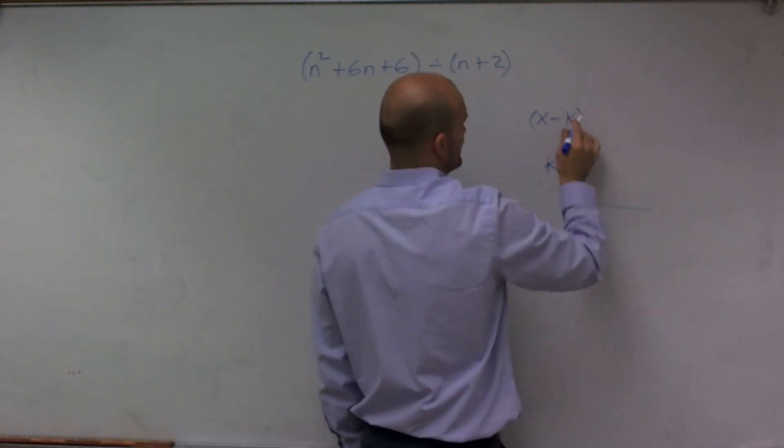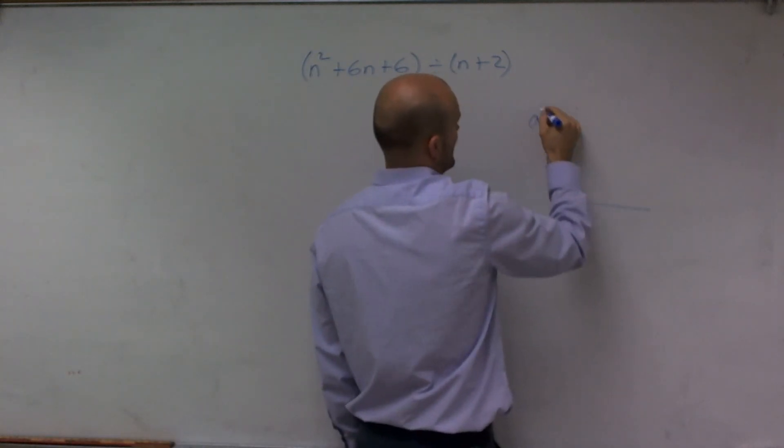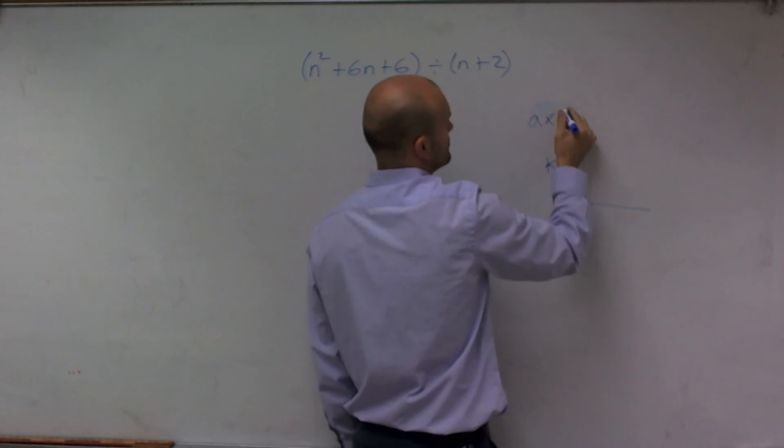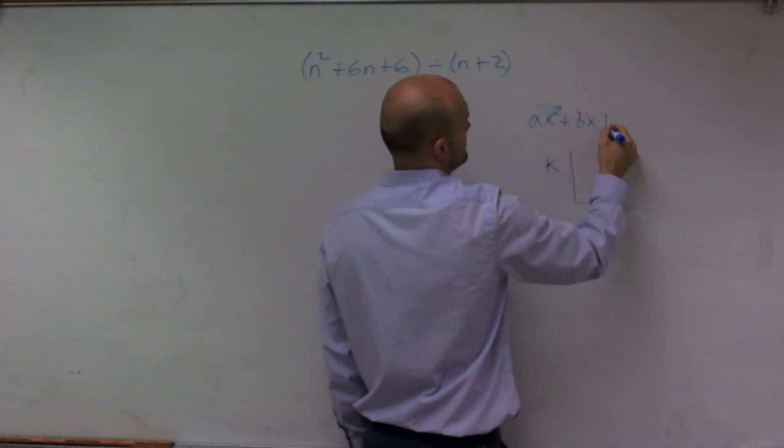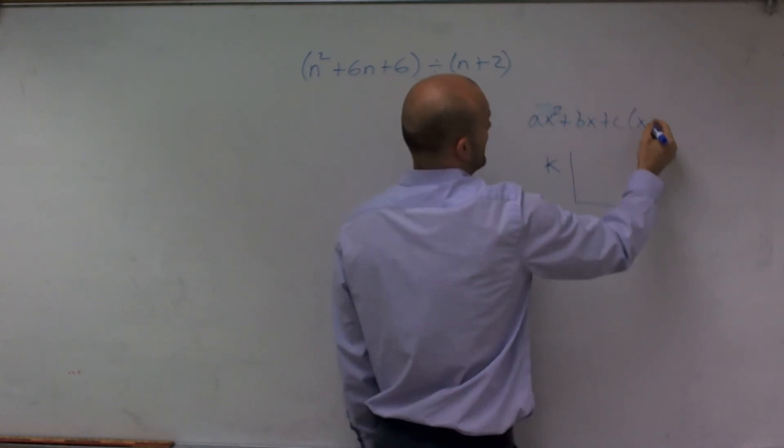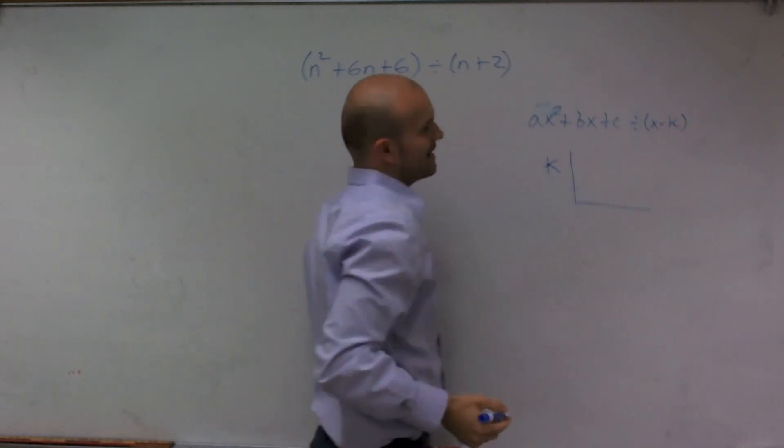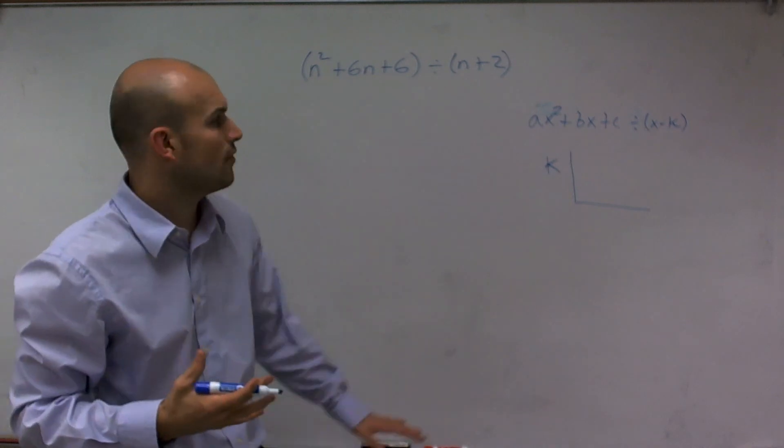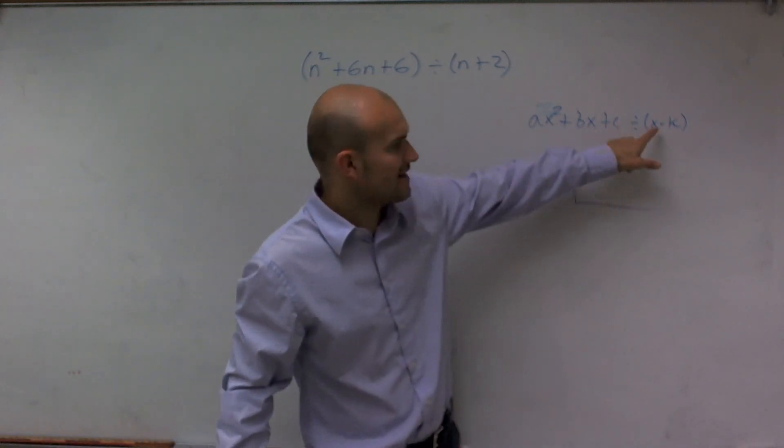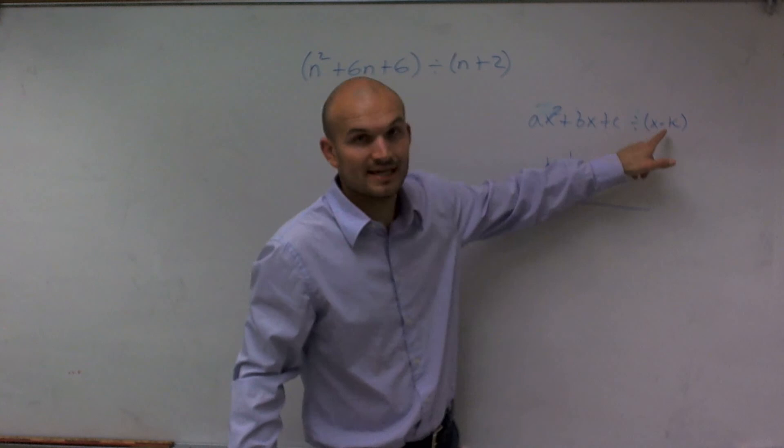And a quadratic, you could say I could have ax squared plus bx plus c divided by x minus k. When you have it in this form, so if you have a quadratic divided by a binomial that's in this form,